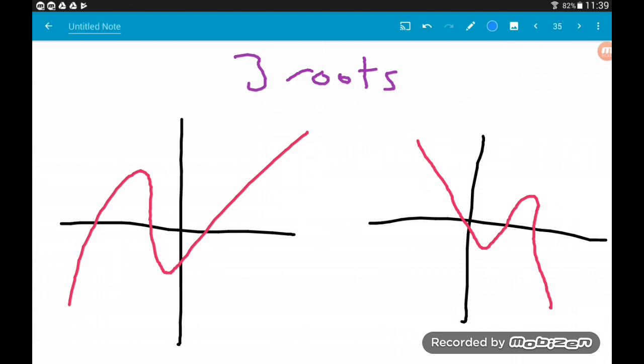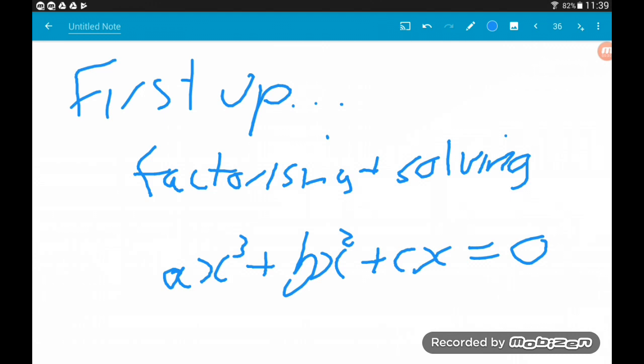So that's what cubics with three real roots can look like. We are starting our adventures with cubics by factorizing and solving cubics that don't have a constant term at the end.